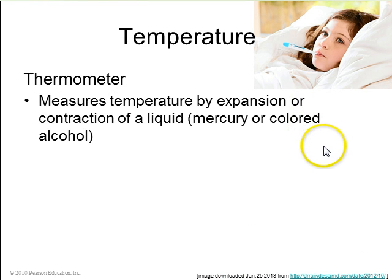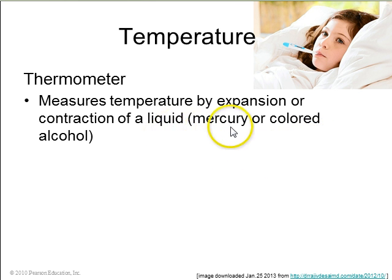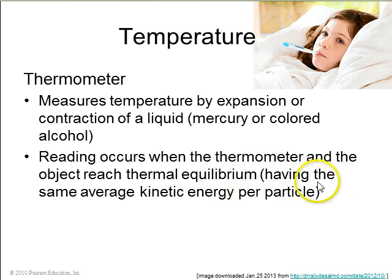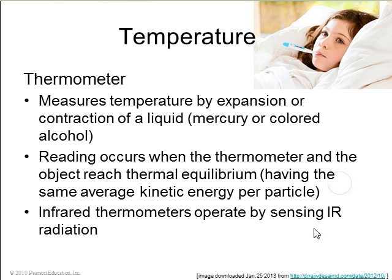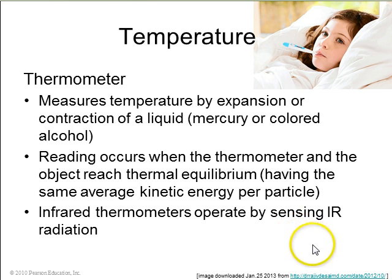A thermometer measures temperature, usually by the expansion or contraction of a liquid — sometimes there's a mercury thermometer, sometimes a red alcohol. The reading occurs when the thermometer and whatever you're measuring come into thermal equilibrium, so they have the same kinetic energy per particle. An infrared thermometer operates by sensing the infrared radiation from the object.